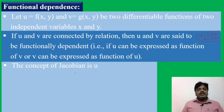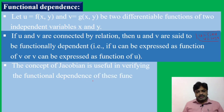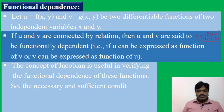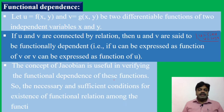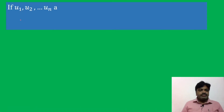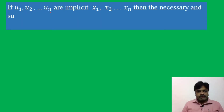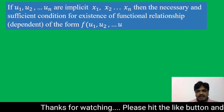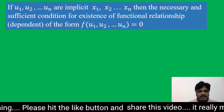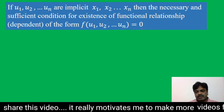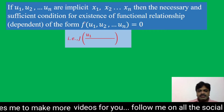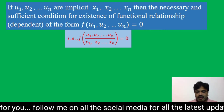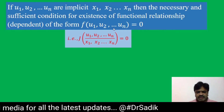The concept of Jacobian is useful in verifying the functional dependence of functions. By using the Jacobian, we determine whether functions are functionally dependent or independent. The necessary and sufficient condition for the existence of a functional relation among functions u1, u2, ..., un of independent variables x1, x2, ..., xn — meaning a dependence of the form f(u1, u2, ..., un) = 0 — is that the Jacobian J(u1, u2, ..., un / x1, x2, ..., xn) equals 0.